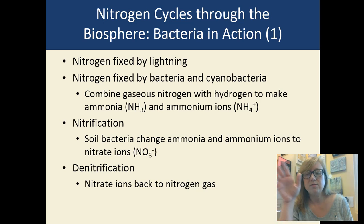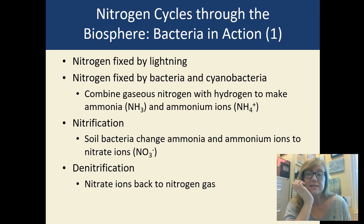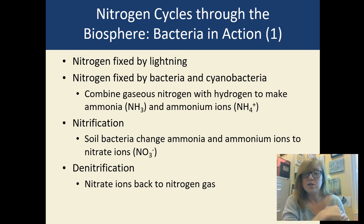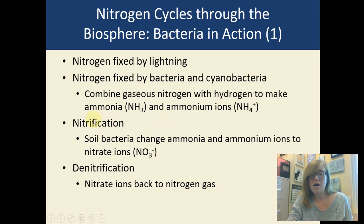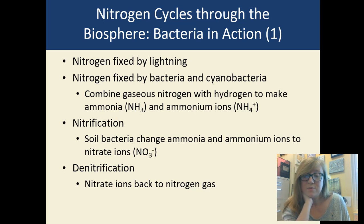N2 gas has a very strong double bond that's hard to break. Nothing in our body can break that bond so it just gets breathed back out. For us to use nitrogen, it needs to be 'fixed.' Lightning can fix nitrogen, and certain bacteria can also fix nitrogen — they take N2 gas and combine it with hydrogen to make ammonia or ammonium.